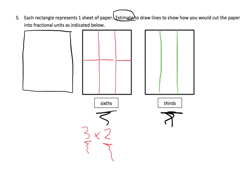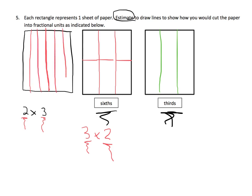Another way to draw sixths: think of it as two times three. First cut in half — that's the two — then cut each half into three pieces: one, two, three; one, two, three. And we get six pieces.